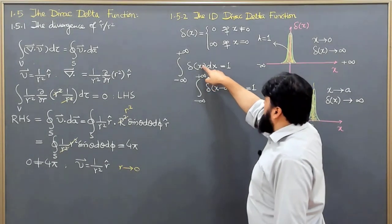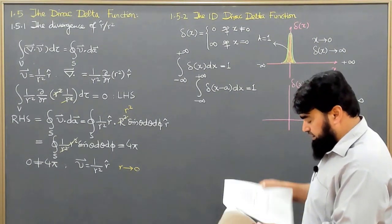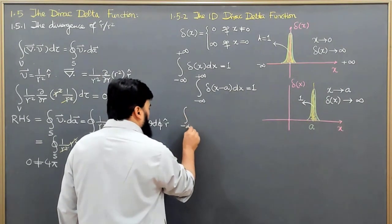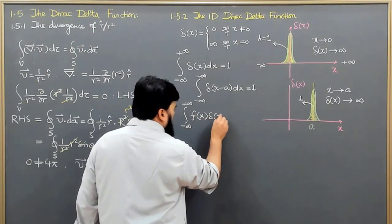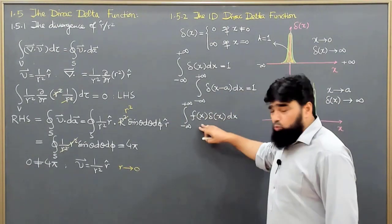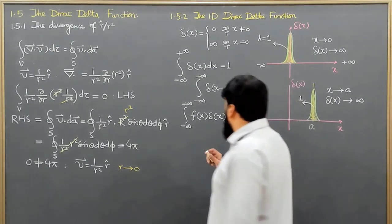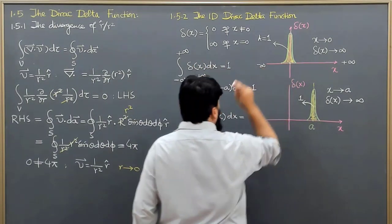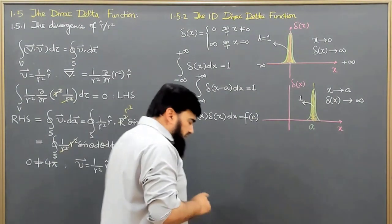Instead of x minus 0, we write x minus a. When we associate this with a function f(x), we get the integral from minus infinity to plus infinity of f(x) times δ(x) dx. Since δ(x) acts like multiplication by 1, it gives a value only at one point — x equals 0 — and is zero everywhere else.